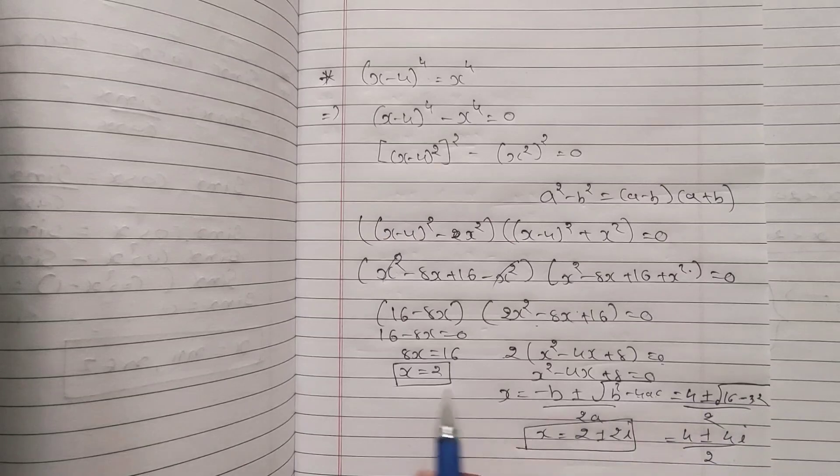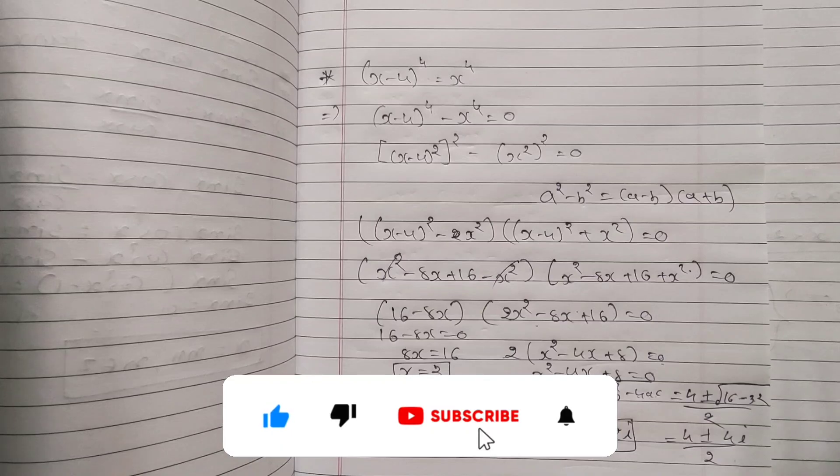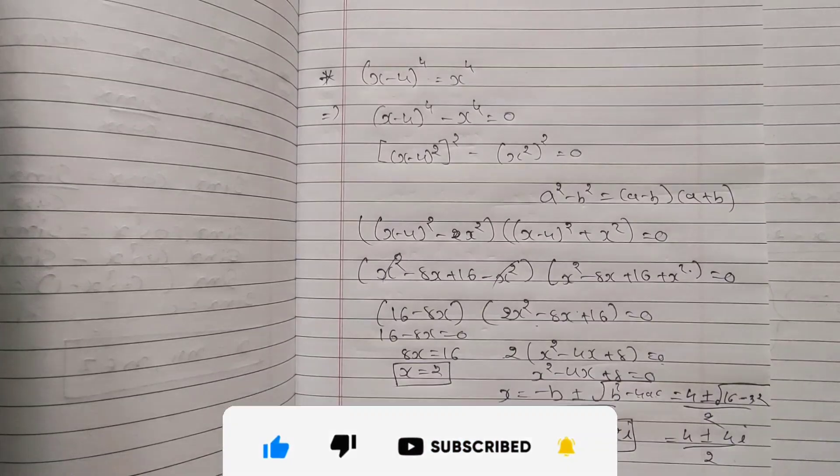So we get three answers in this equation: x = 2, 2 + 2i, and 2 - 2i. I hope you got it. This is a very conceptual question. If you still have any query or doubt, you can comment in the comment box. If you like this video, make sure you subscribe to my channel. Thank you so much for watching.